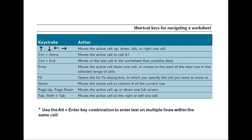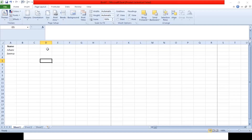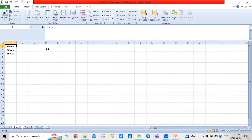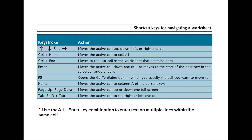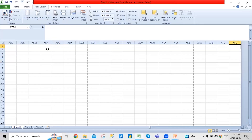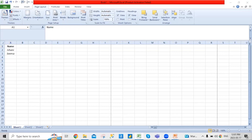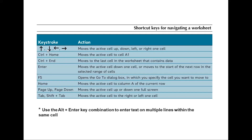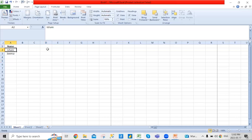Next we have Control Home and Control End. If you press Control Home, it will move your active cell to A1. For example, let's say I'm right now here — if I press Control Home, I'll be assigned to cell A1. Control End moves to the end of that sheet. Pressing Enter moves to the active cell, and if I press Enter, I'll move to the next cell.